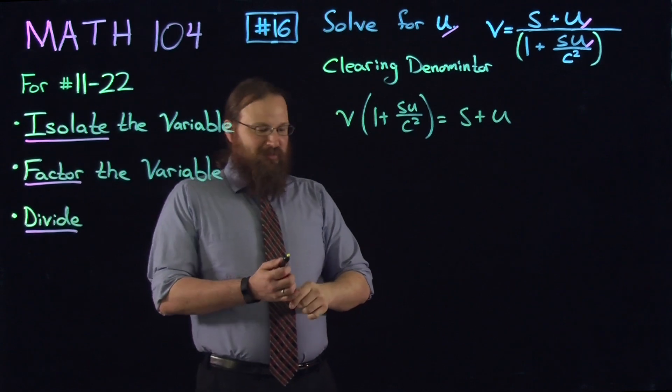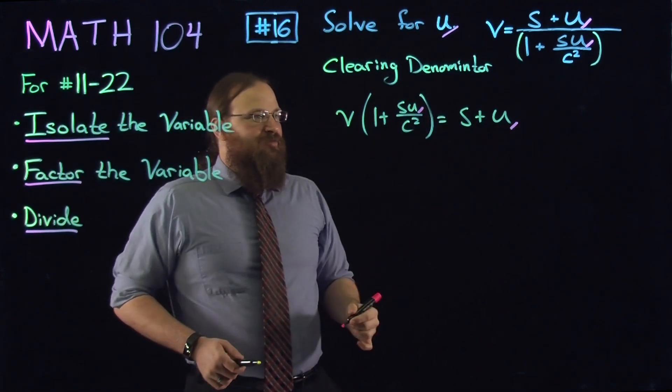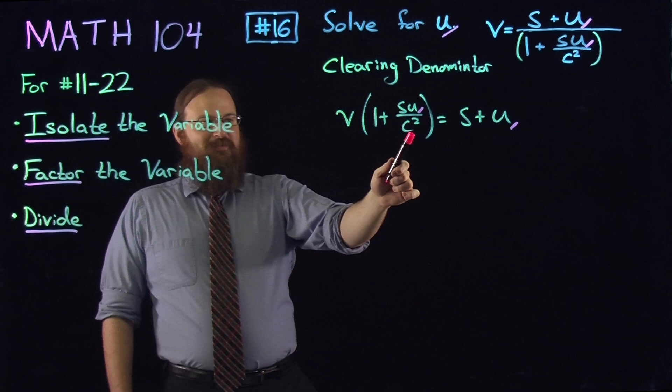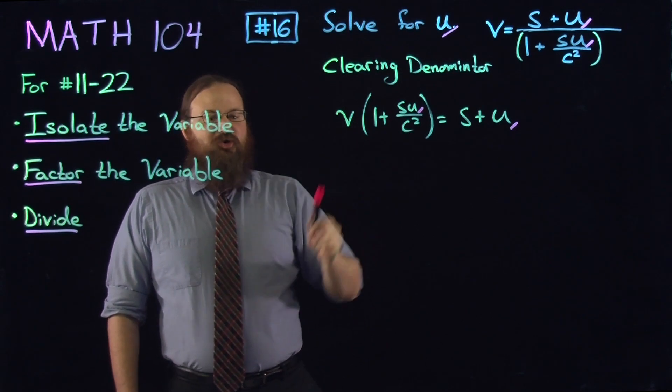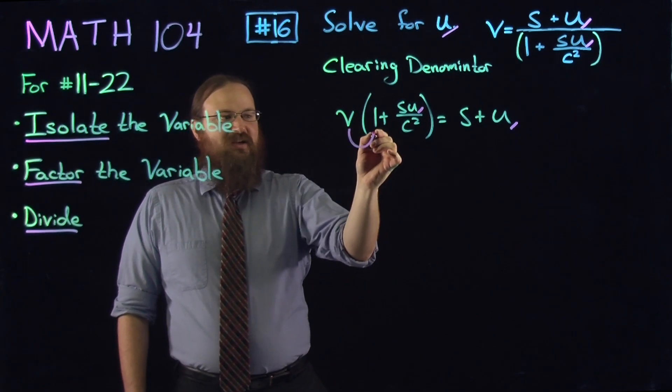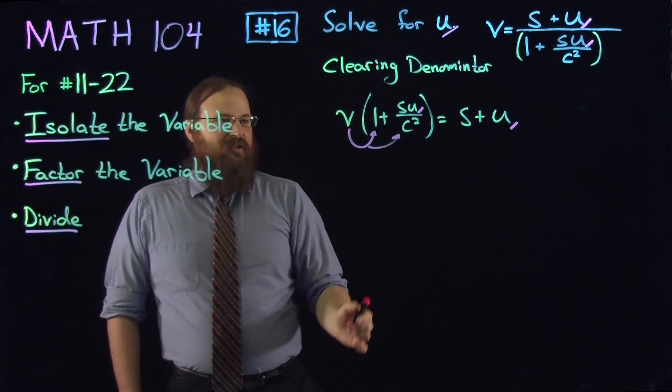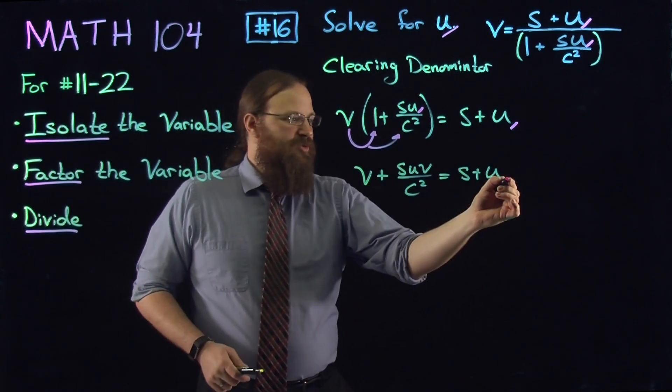Let's reassess where our variables are. We're looking for u, we're isolating u. u is kind of deep in this problem. We're going to have to distribute. So we'll distribute the v through, and we can see where our u variable is.